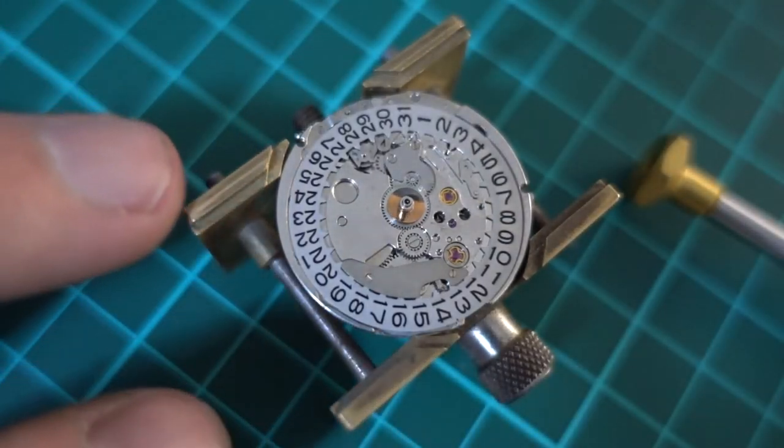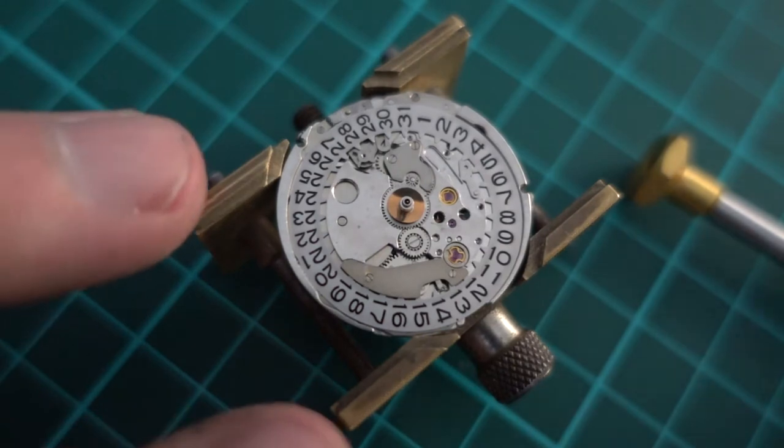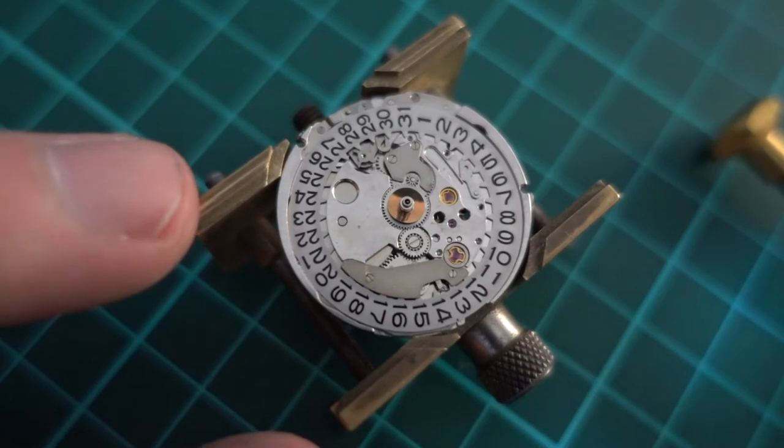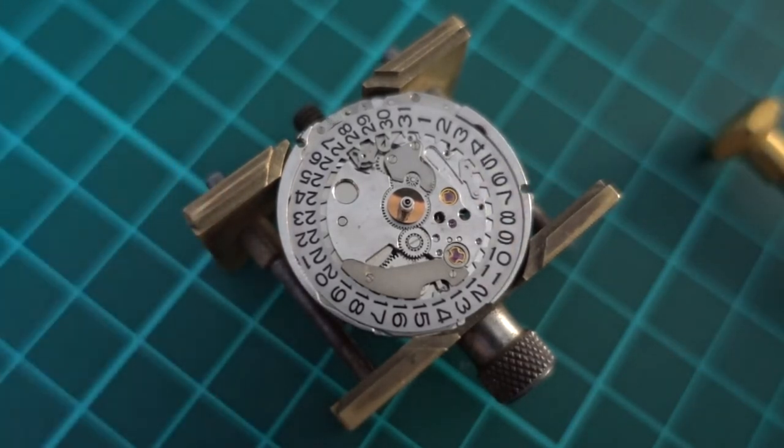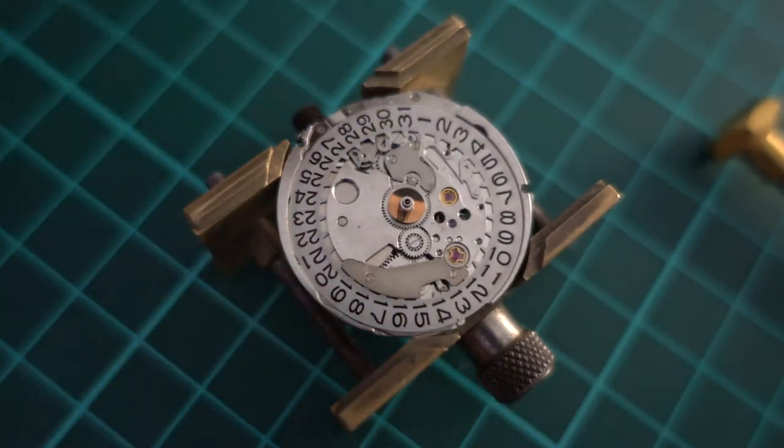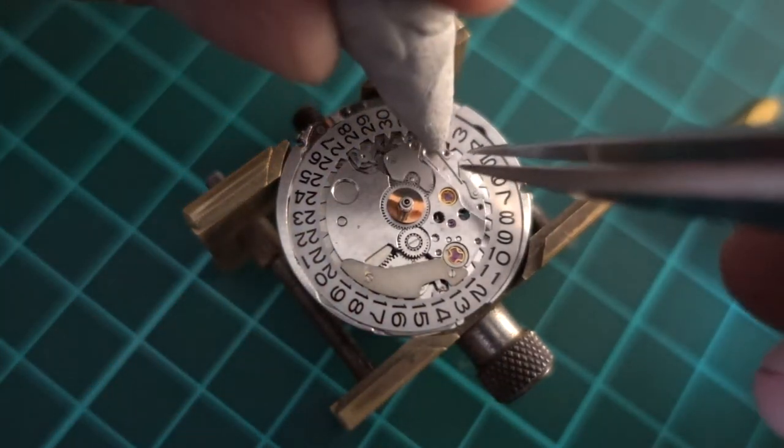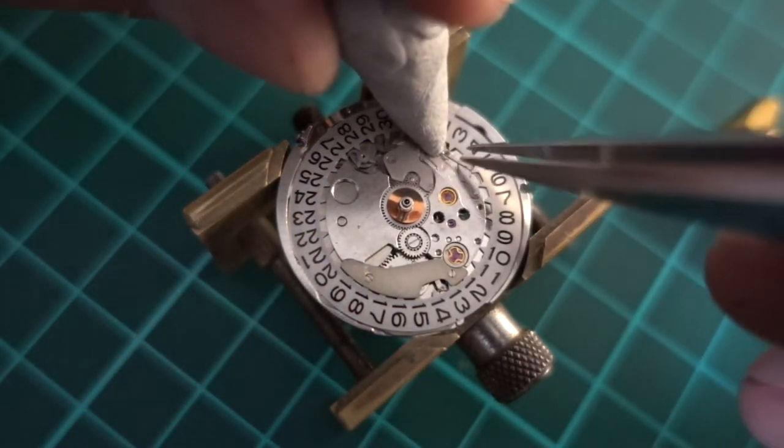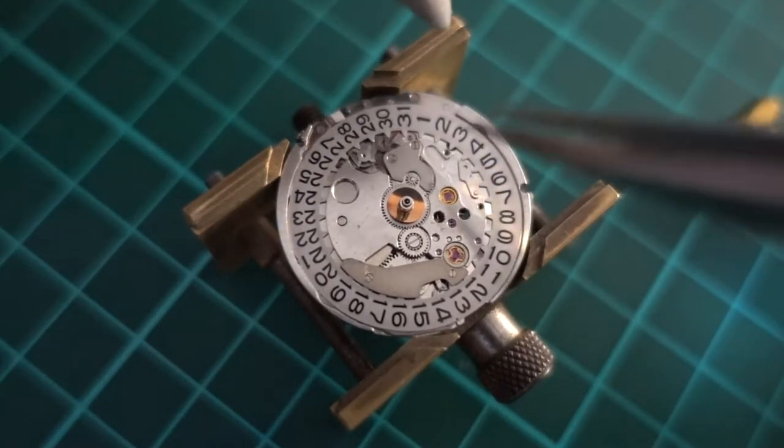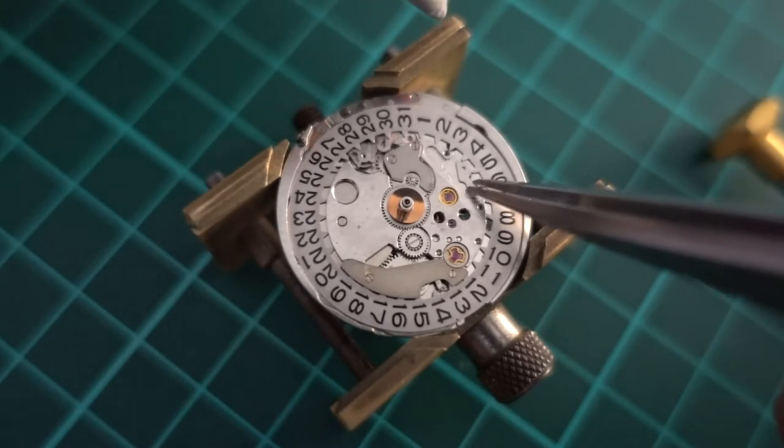We've just taken one side of the calendar plate off there. You can see the click for the date ring. Now you can see the click there is a shepherd's crook spring, and just that little lever there. To take the shepherd's crook spring off I'm just using Rodico and the tweezers. That stops it from shooting off into the wilderness.